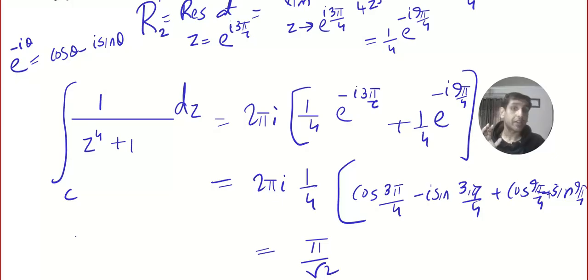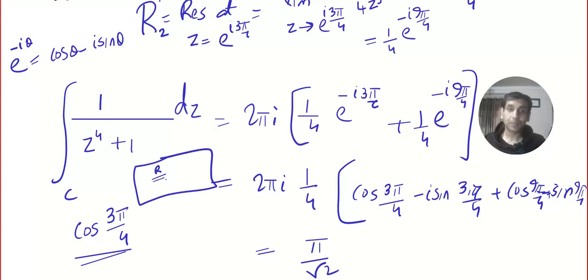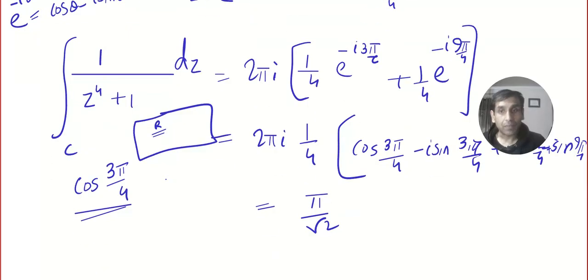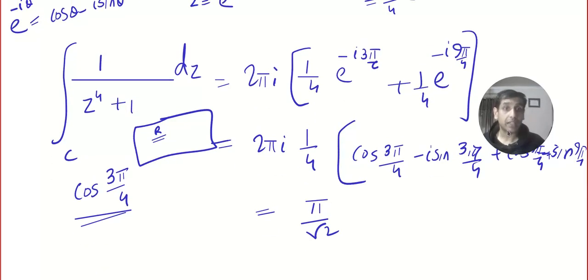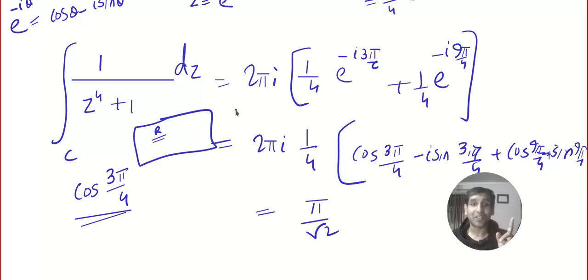Use a calculator in radian mode to evaluate cos(3π/4) and related terms. We now move to another important problem, which will be the last question in Type 1. See you soon!